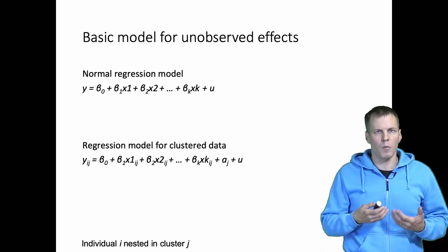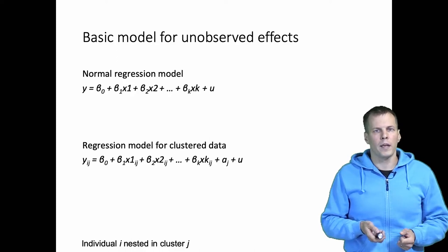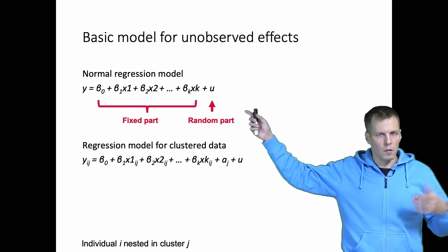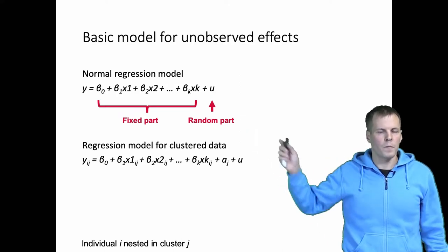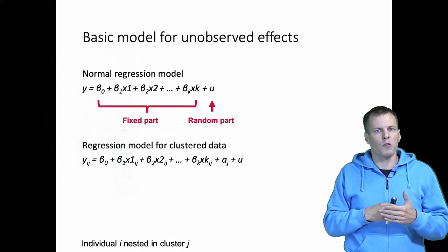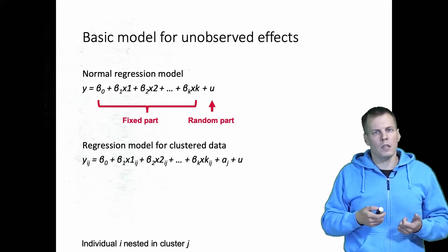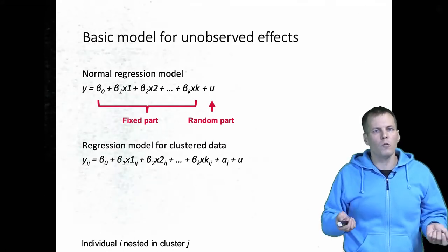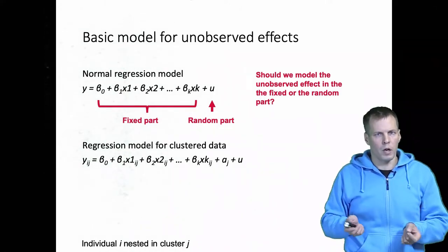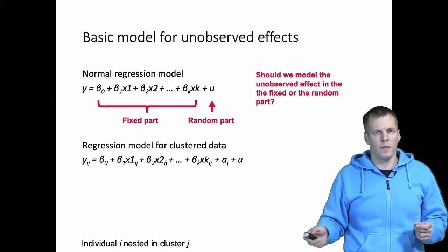So what is the problem that these techniques try to address? In a normal regression model we have the predictors and observed variables from the fixed part, and then we have the random part that only contains the error term. In a regression model for clustered data we also have unobserved heterogeneity — the unobserved term here called AJ. The key question is: what do we do with AJ? Should it go into the fixed part or into the random part? The answer determines whether we go for fixed effects or random effects modeling.